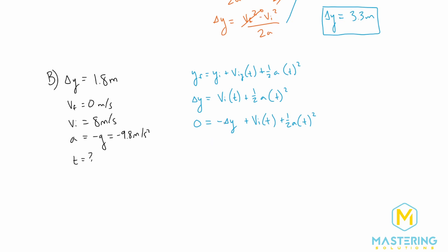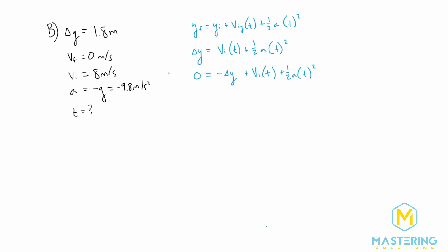But just for simplicity I like to multiply all this by negative 1. I just personally think it looks a little bit cleaner. So we have positive delta Y minus V_i times T minus one half A times T squared. Like I said, I just think this looks a little bit cleaner. Okay, so now that we have our final equation form right here, let's plug in our numbers.